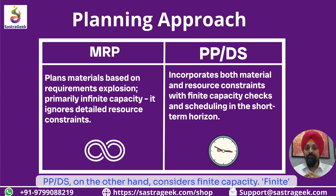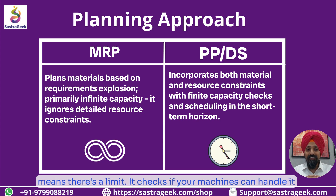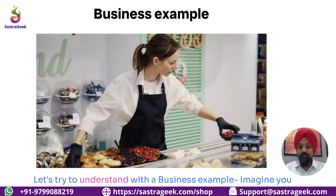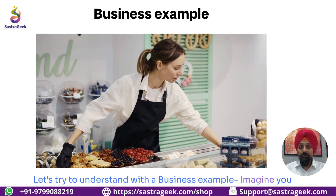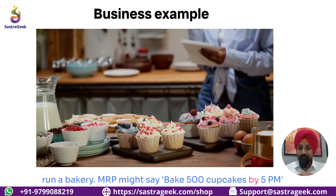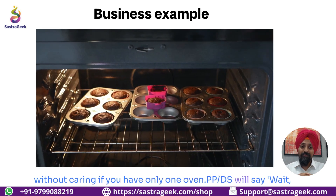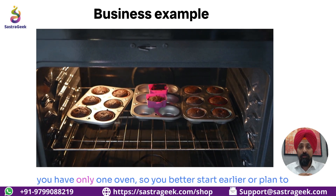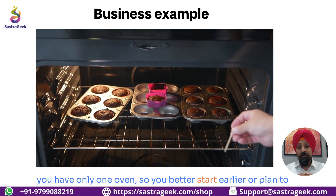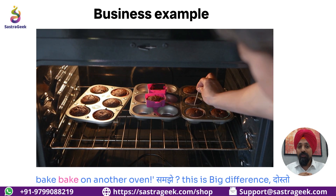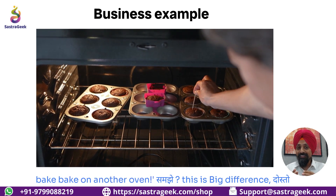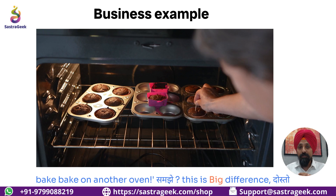PPDS, on the other hand, considers finite capacity. Finite means there's a limit — it checks if your machines can handle it at that time. For example, imagine you run a bakery. MRP might say bake 500 cupcakes by 5pm without caring if you have only one oven. PPDS will say, wait, you have only one oven, so you better start earlier or plan to bake on another oven. This is a big difference.